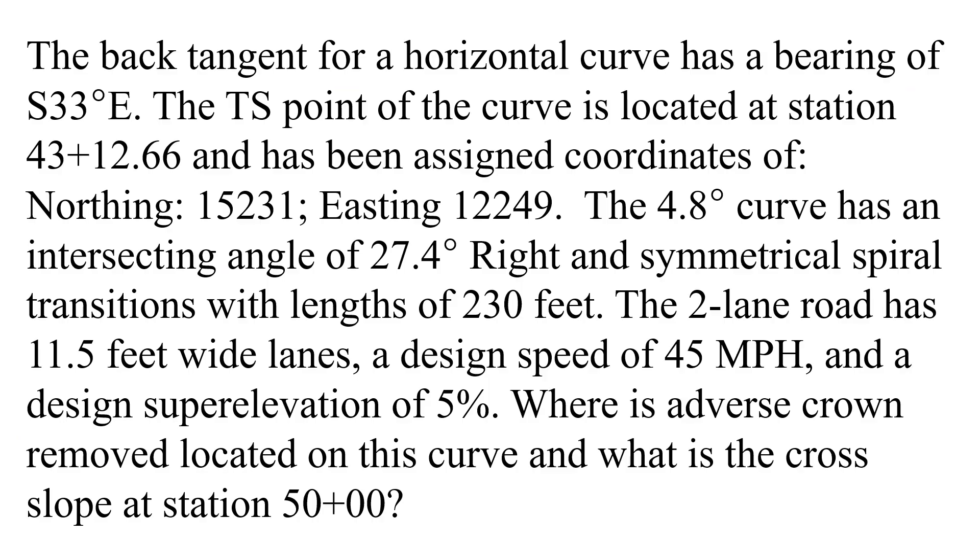We're given a lot of information about a curve, and we'll go through each of these components piece by piece, especially the parts that we need. There is some extra information in this question, but ultimately we're being asked where is the adverse crown removed located on this curve, and what's the cross slope at station 50?